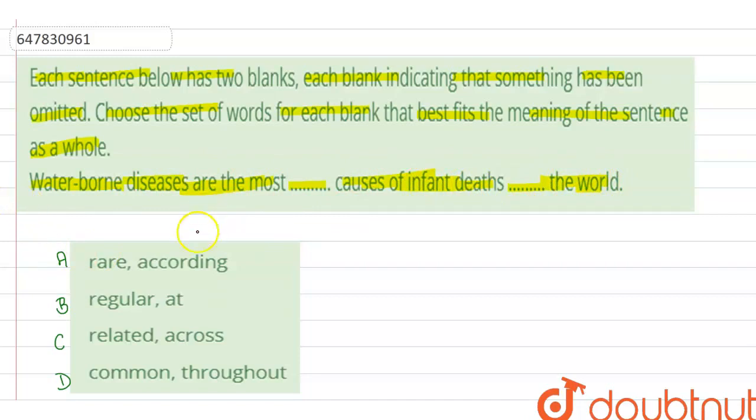Let's check option-wise. What is the first option? Rare. Rare causes. In the first blank, we use rare causes, but what is the second option? According. According is always called preposition to. Here, there is no use of two prepositions here, so option A is incorrect.